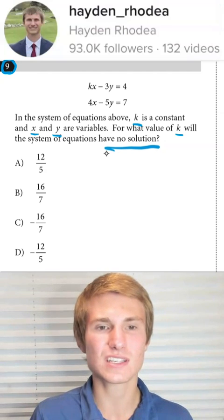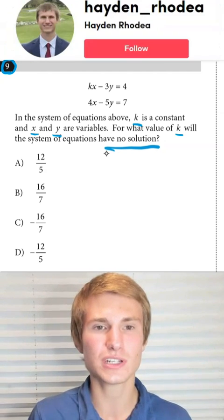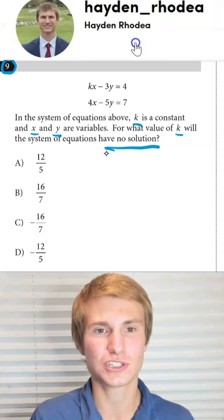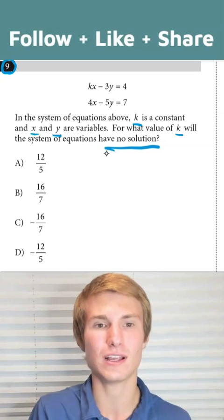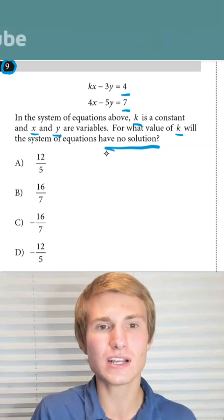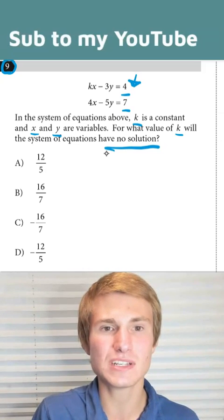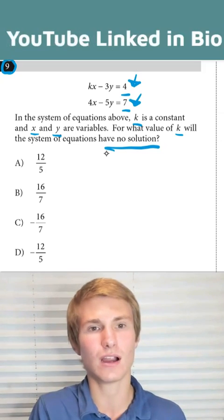In order for a system of equations to have no solution, their slopes have to equal each other and their y-intercepts have to be different. Looking at these two equations, we already can tell that their y-intercepts will be different since we have a 4 there and a 7 there.